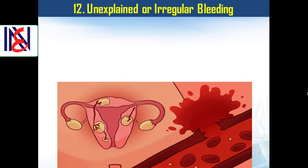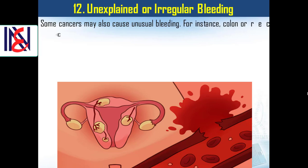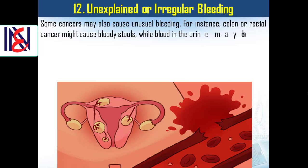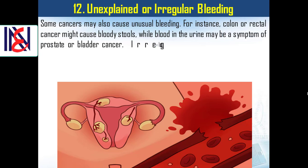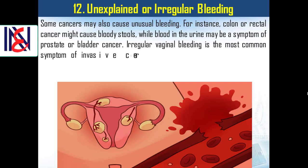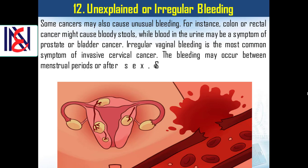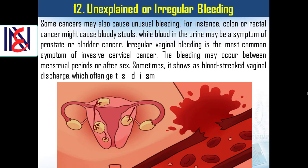12. Unexplained or irregular bleeding. Some cancers may also cause unusual bleeding. For instance, colon or rectal cancer might cause bloody stools, while blood in the urine may be a symptom of prostate or bladder cancer. Irregular vaginal bleeding is the most common symptom of invasive cervical cancer. The bleeding may occur between menstrual periods or after sex. Sometimes it shows as blood-streaked vaginal discharge, which often gets dismissed as spotting.